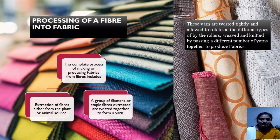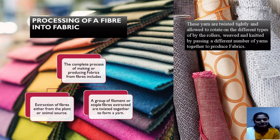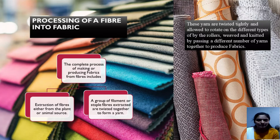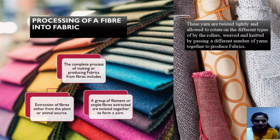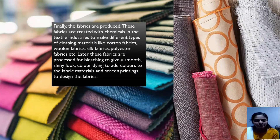So to summarize: first we obtain the fiber from any source, whether it is a plant source or an animal source. Then this fiber is twisted together to form yarn, and then this yarn is weaved or knitted to make any kind of fabric. Finally, the fabrics are produced.